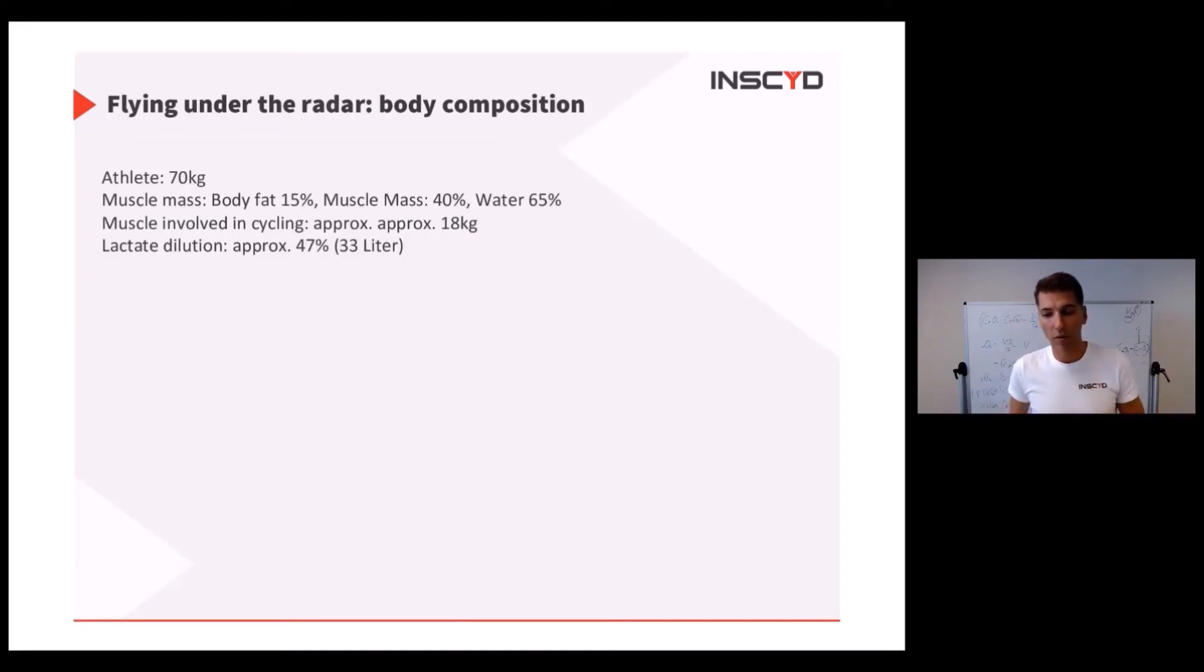Let me show you as an example what this changes. Just follow me with that one. Assume you have an athlete of 70 kilograms. Assume you have a body fat of 15% and muscle mass of 40%, and 65% water, which are common average values for a good trained athlete. What you can actually measure with your $200 Tanita scale from Amazon.